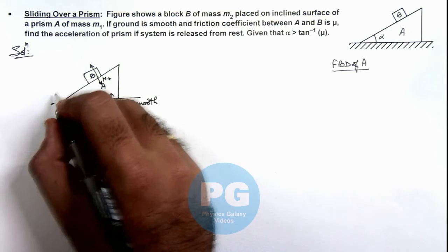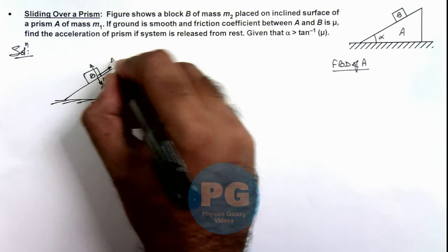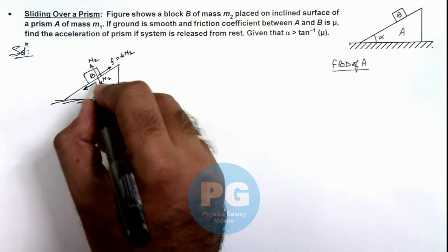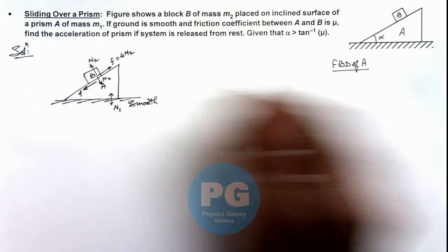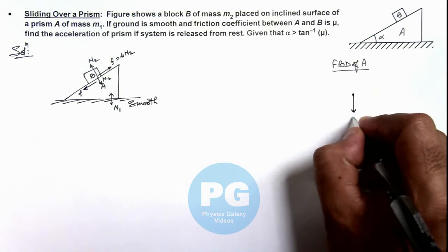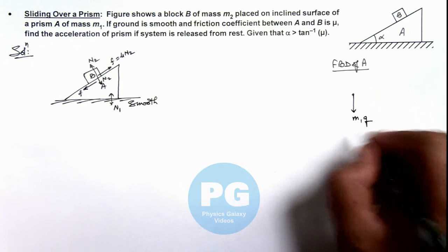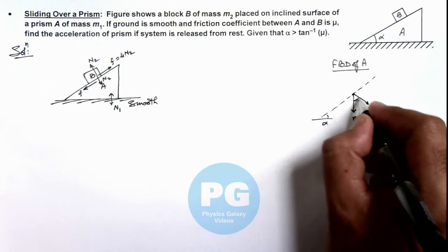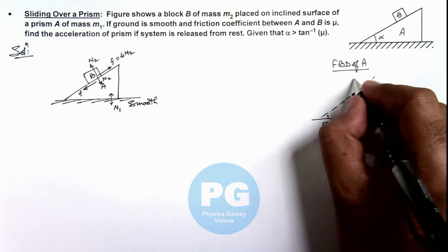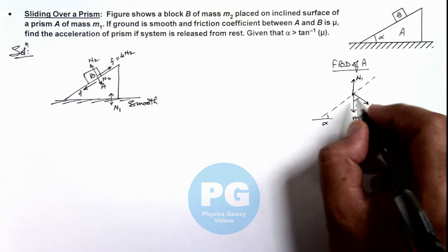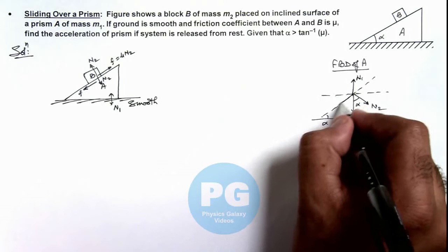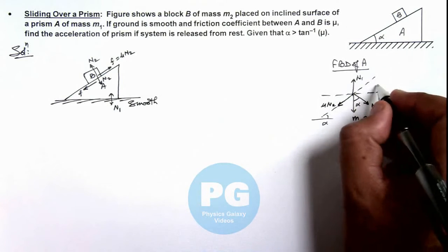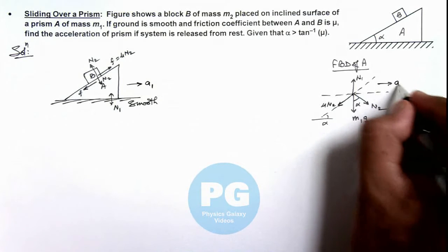Since B slides down, it experiences friction in the upward direction, F = μN2. The friction on the prism A will act in the downward direction along the incline. In the free body diagram of A, it experiences its weight m1g downward, normal reaction N2 from the block perpendicular to the incline, normal reaction N1 upward from the ground, and friction μN2 acting down the incline. Since the incline angle is α, the relevant angles are also α. We consider prism A moving to the right with acceleration a1.